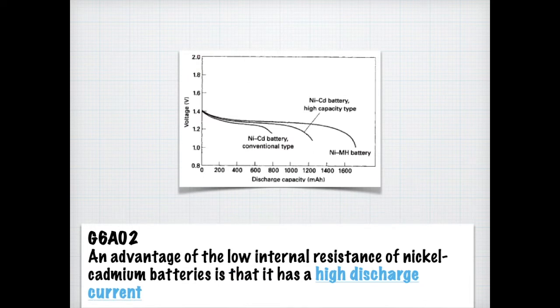You may be asked on the exam, what is the advantage of the low internal resistance of a nickel-cadmium battery? If you look at this chart, you can tell that there's a discharge capacity that's fairly high. However, you also can notice that a nickel-metal hydride battery is superior. But for the exam, you need to know that the advantage of the low internal resistance of a nickel-cadmium battery is that it has a high discharge current.